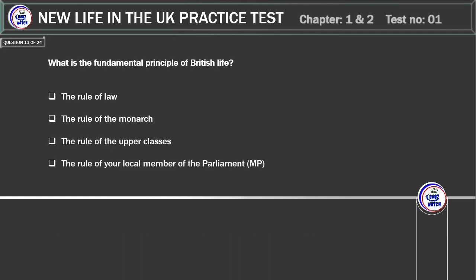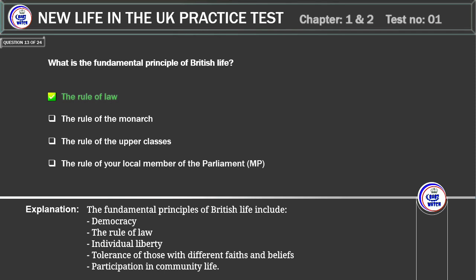What is the fundamental principle of British life? The rule of law. The rule of the monarch. The rule of the upper classes. The rule of your local member of parliament (MP). Correct answer: the rule of law. Explanation: the fundamental principles of British life include democracy, the rule of law, individual liberty, tolerance of those with different faiths and beliefs, and participation in community life.